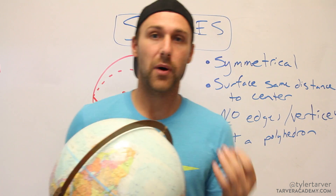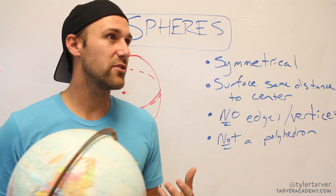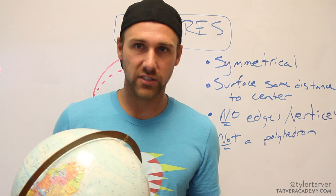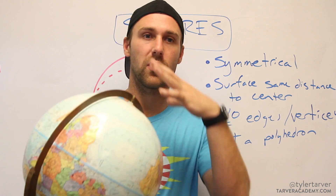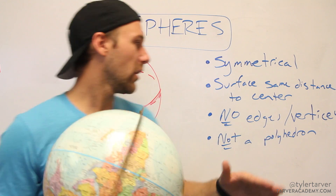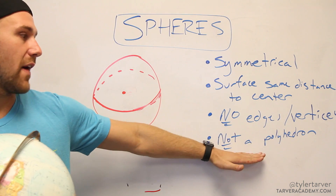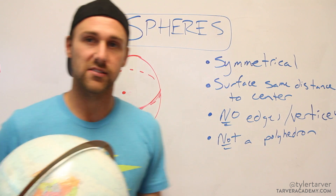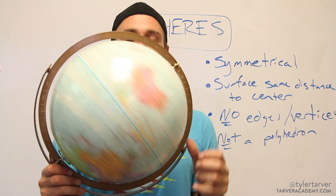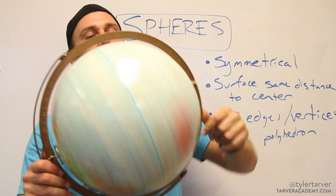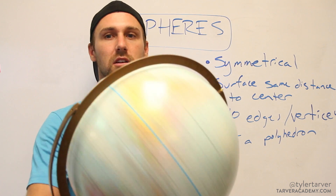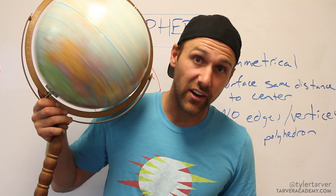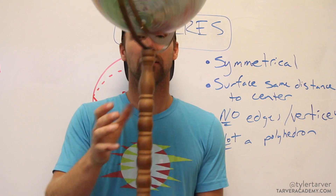Last property: a sphere is not a polyhedron. Polyhedrons are like Rubik's cubes or a triangular prism — shapes where all those edges happen. If you know the other properties, you don't really need to worry about this one. It's just a perfect ball — spin it. That's a sphere, ladies and gentlemen.